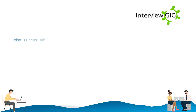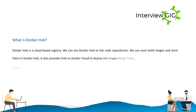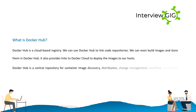What is Docker Hub? Docker Hub is a cloud-based registry. We can use Docker Hub to link code repositories. We can even build images and store them in Docker Hub. It also provides links to Docker Cloud to deploy the images to our hosts. Docker Hub is a central repository for container image discovery, distribution, change management, workflow automation, and team collaboration.